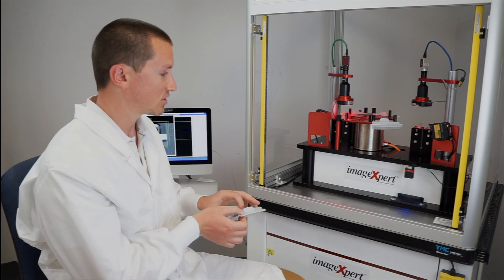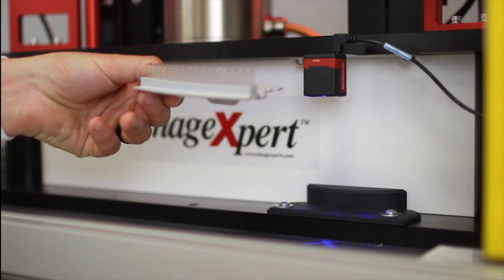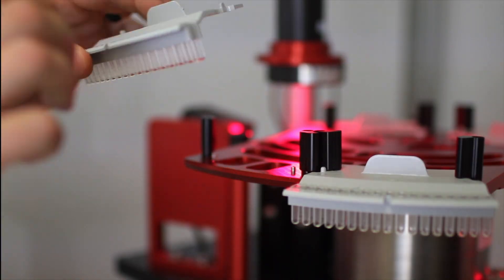To begin the inspection, the barcode on the back of the cuvette is scanned with the barcode scanner to help trace the part throughout the entire production line.